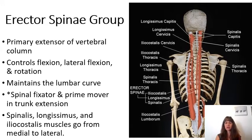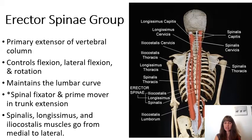These muscles go all the way from the ilium and the base of the sacrum, even down towards the middle posterior aspect of the sacrum, all the way up to the occiput. Working from medial to lateral, we have spinalis muscles most medially, then longissimus muscles, and then the iliocostalis muscles. Spinalis, longissimus, and iliocostalis make up the erector spinae muscle group from medial to lateral.